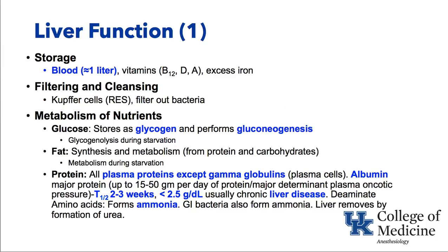The liver has multiple functions. It stores blood — about a liter. It stores fat-soluble vitamins and excess iron. It has filtering and cleansing properties; the Kupffer cells, which are part of the reticuloendothelial system, can filter out bacteria. A key function is metabolism of nutrients: the liver stores glucose as glycogen, and during starvation can break that glycogen down to glucose. It can synthesize fats from protein and carbohydrates, and during starvation states can metabolize fats.